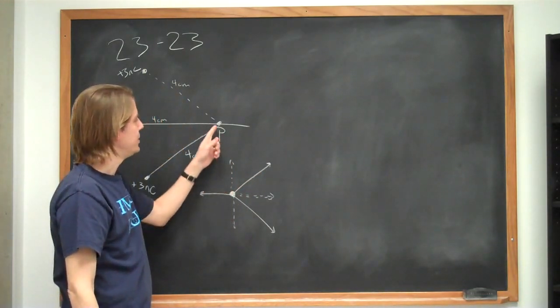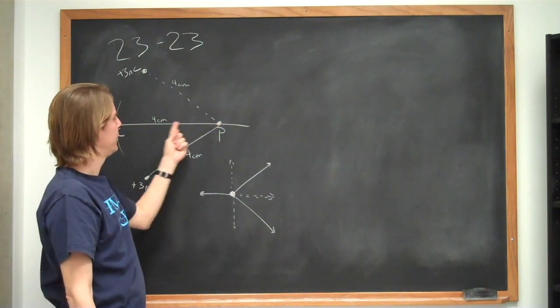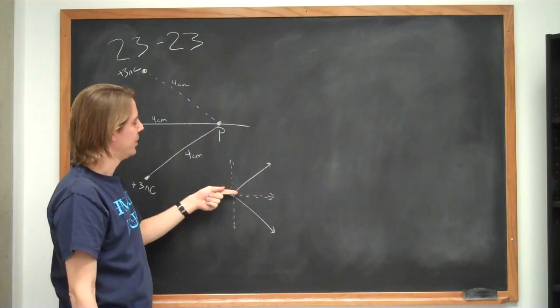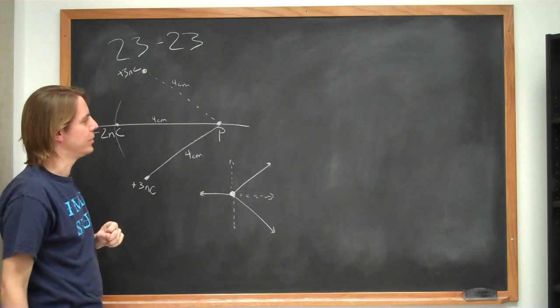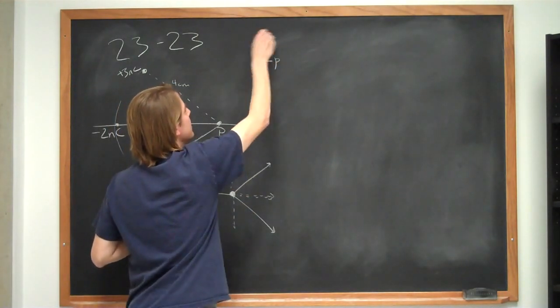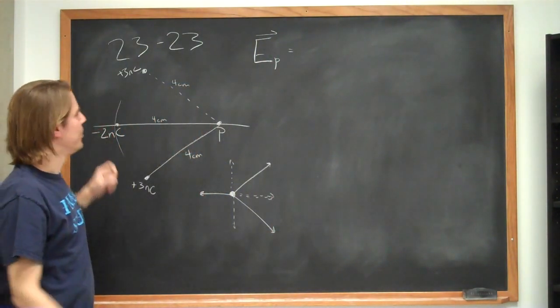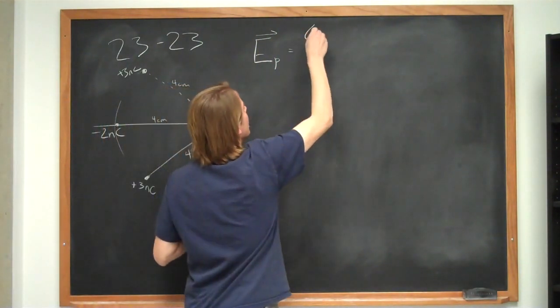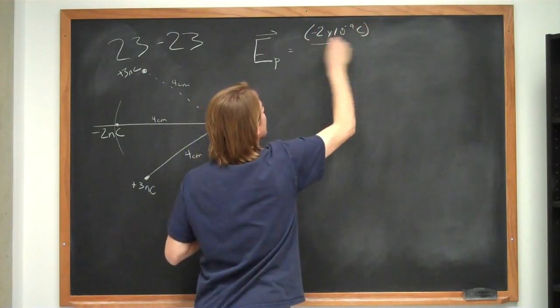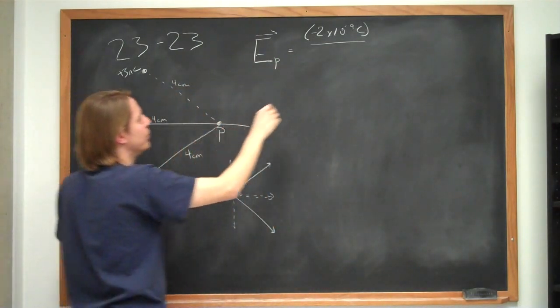So to get the field at P, we really just need the field due to the minus 2 nanocoulombs charge, which is along this axis, and the sum of the horizontal components of the 2 plus 3 nanocoulombs charges. So we can say, then, that E field at P will be equal to this contribution, which is minus 2 nanocoulombs. Minus 2 times 10 to the minus 9 coulombs over the distance squared. The distances are all 0.04 meters.